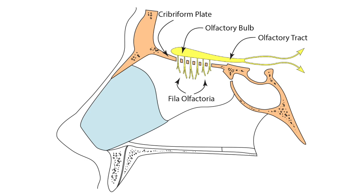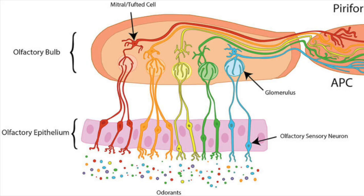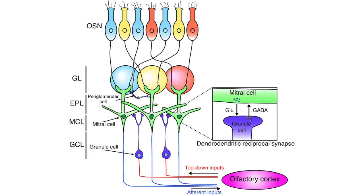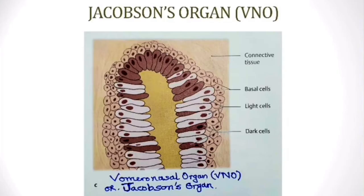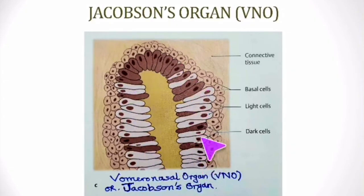These fila olfactoria, also called the olfactory nerve — about 20 nerves on each side — reach the olfactory bulb, where they relay in the mitral or tufted cells. In the olfactory bulb there were also inhibitory neurons: granule cells and periglomerular cells. Now in Jacobson's organ, which is this tubular duct-shaped structure, the cells are similarly organized.